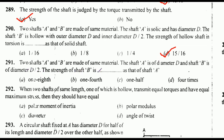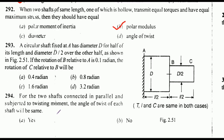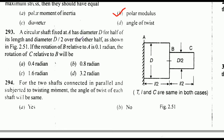Two shafts A and B made of the same material: shaft A is solid with diameter d; shaft B is hollow with outer diameter d and inner diameter d/2 — the strength of the hollow shaft in torsion is dash as that of the solid shaft. Correct answer: option D — 15/16. Shaft B has diameter D/2 — the strength of shaft B is dash as that of shaft A. Options: 1/8, 1/4, 1/2, four times. Correct answer: option A — one eighth.